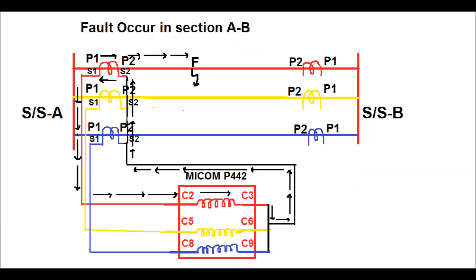Whenever a fault occurs at point F between substation A and B, the current will flow from P1 to P2 in the primary side. In the secondary side, the relay will see the fault in the forward direction and it will send a trip signal to the circuit breaker associated with substation A to clear the fault.